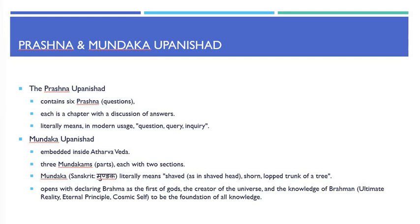The Mundaka Upanishad consists of three Mundakams or parts, each with two sections. Mundaka in Sanskrit literally means shaved, shorn, or lopped trunk of a tree. The Mundaka Upanishad opens with declaring Brahma as the first of Gods, the creator of the universe, and the knowledge of Brahman — the ultimate reality, eternal principle or cosmic self — to be the foundation of all knowledge.